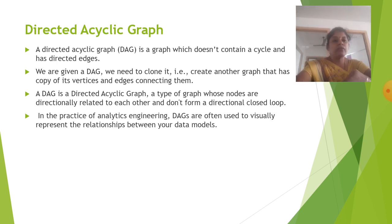So a DAG is a directed acyclic graph, a type of graph whose nodes are directly related to each other and don't form a directional closed loop. In the practice of analytics engineering, DAGs are often used to visually represent the relationship between your data models.